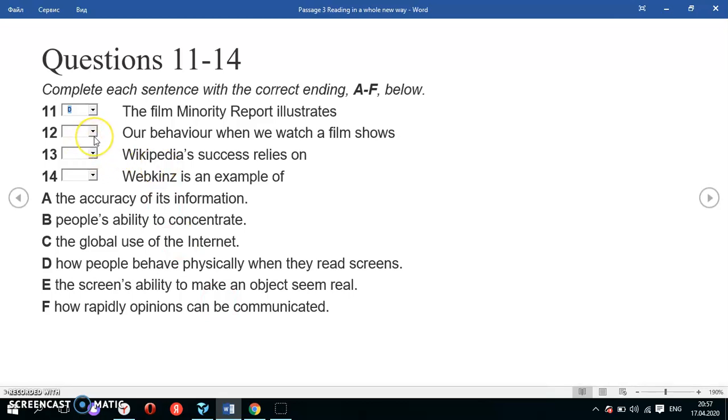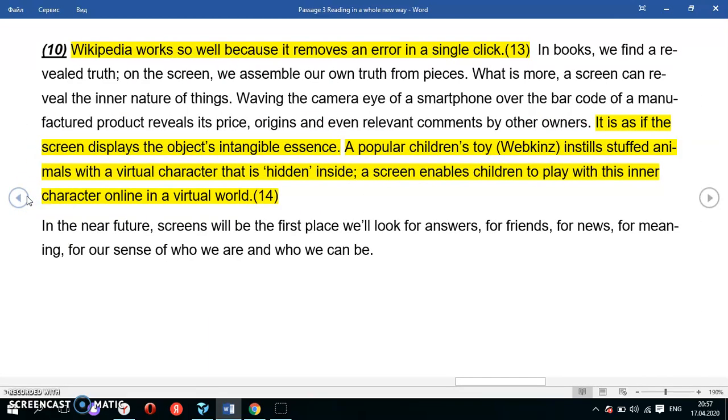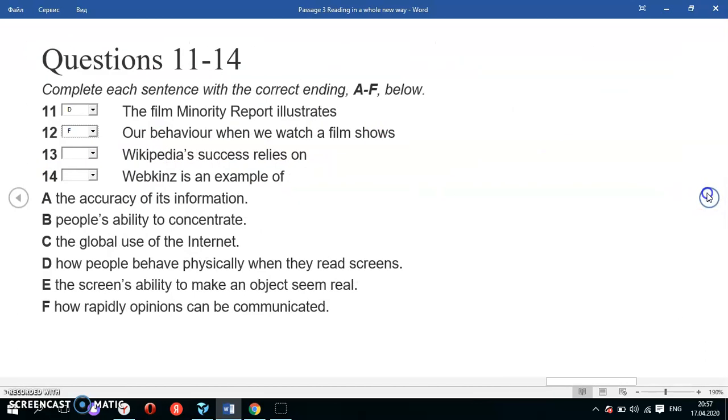Question 13: 'Wikipedia's success relies on...' Wikipedia is a keyword. Wikipedia is not paraphrased—it's my advantage because I will find the same word in the passage. Wikipedia is given here after 10. 'Wikipedia works so well because it removes an error in a single click.' Okay, so Wikipedia is so successful because it eliminates errors very quickly, in a single click.